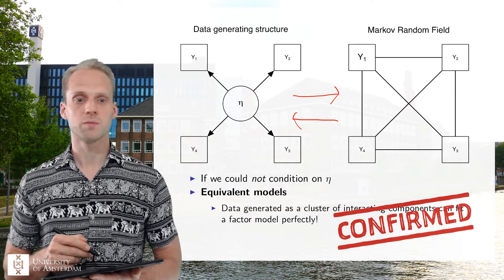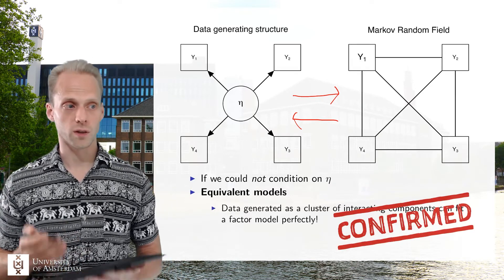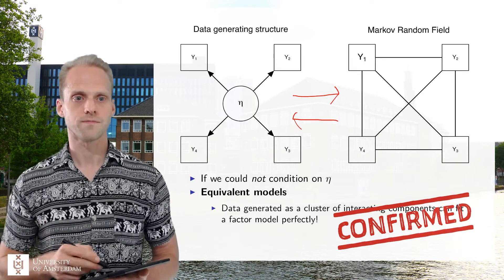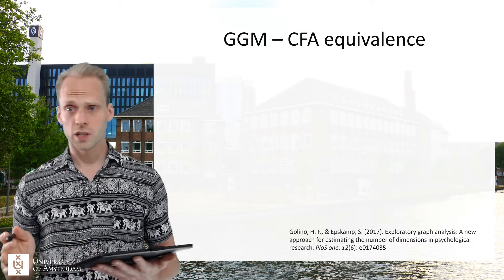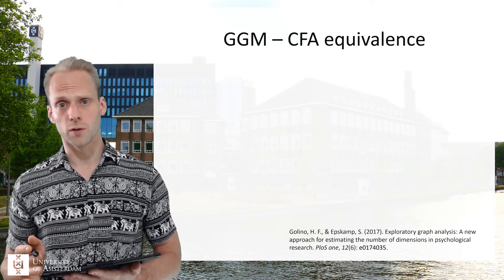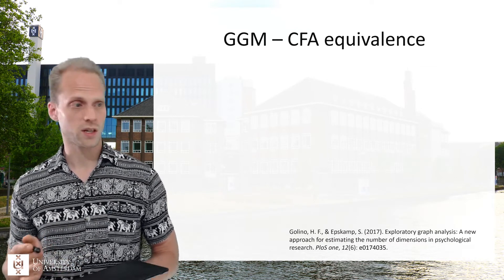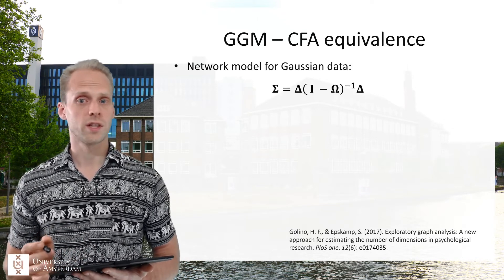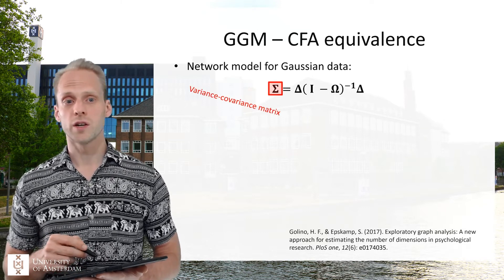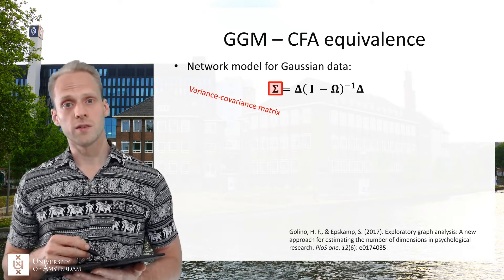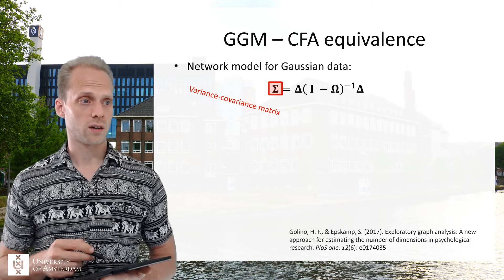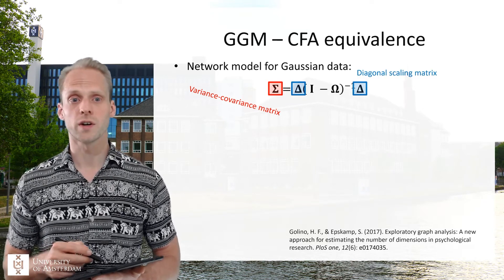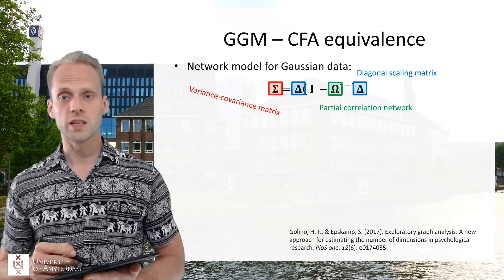This equivalence has pretty much been confirmed mathematically as well, which is a very strong and powerful thing. Let's look at the Gaussian graphical model and the confirmatory factor analysis model — this is a relatively easy way to see this. We already learned that the Gaussian graphical model can take this form: we have a variance-covariance matrix, and this variance-covariance matrix we can model using the angle scaling matrix, which controls the variances of items, and this partial correlation network.